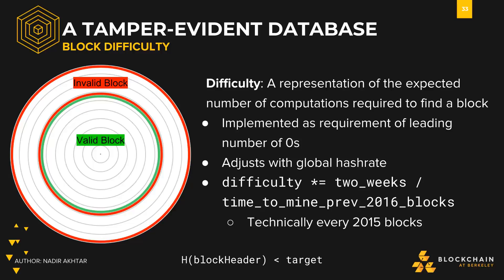The way we recalculate this difficulty is with the equation on the slide. Difficulty is equal to itself times the ratio of two weeks to the time taken to mine the previous 2016 blocks. Every two weeks, we check to see how long it took to calculate those 2016 blocks. If every block took exactly 10 minutes, then it should have taken precisely two weeks to produce those 2016 blocks. If we took too long, it's because the puzzle was too hard to solve. And if we didn't take long enough, then the puzzle was too easy. We make adjustments on the puzzle difficulty accordingly going forward.